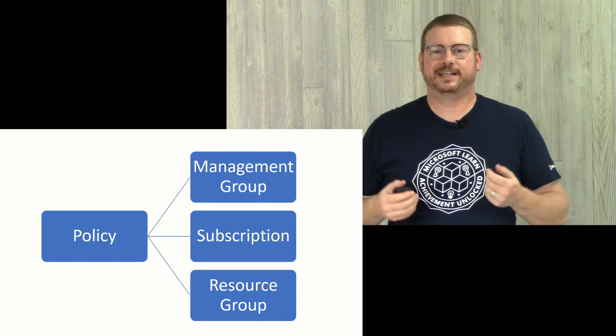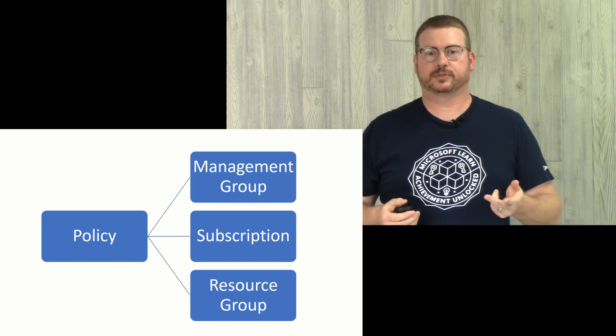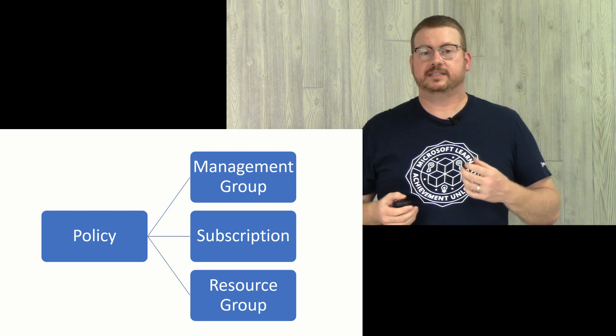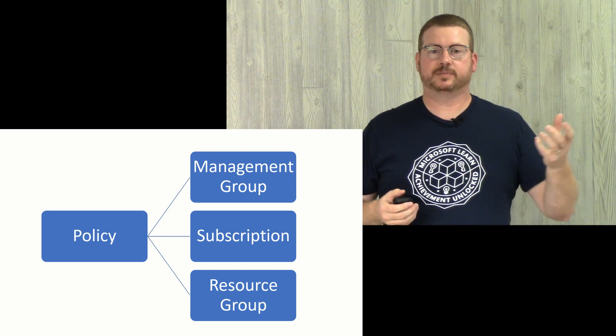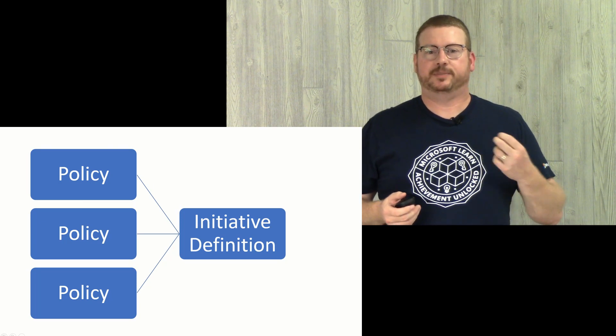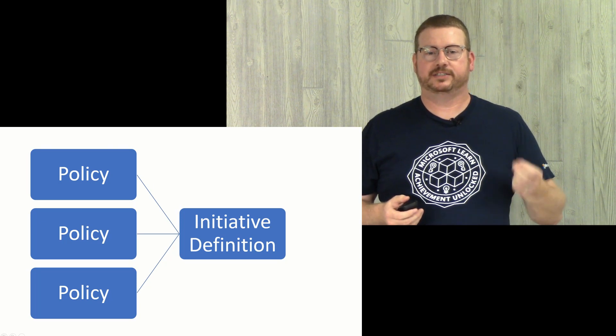For example, let's say you have a subscription where no one should be allowed to deploy oversized, really expensive VMs. You can create a policy that defines the size of VMs that are allowed. You can also set a policy that prevents resource deployments outside of specified regions. Policies can be applied to management groups, subscriptions, or resource groups. They can be implemented to audit as well as enforce the settings. Policies also inherit from the parent subscription or management group. A collection of policies — like the VM size and allowed regions I mentioned — is referred to as an initiative definition.